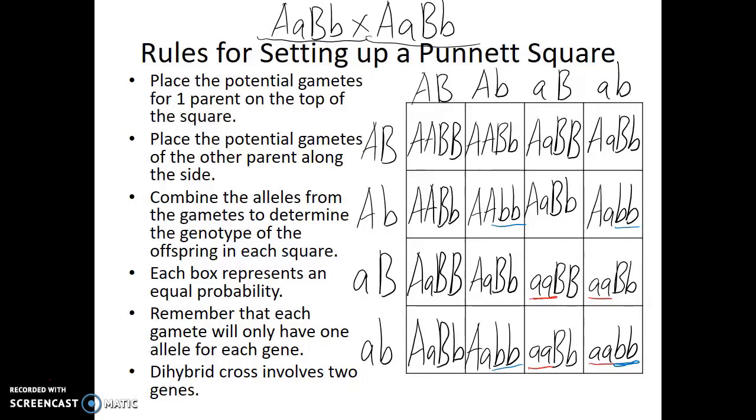There's an equal probability of falling into any one of these sixteen boxes on the chart. But we see nine out of those sixteen boxes would result in an offspring who's dominant for both traits. Three out of the sixteen boxes would result in an offspring dominant for the first trait but recessive for the second. Three out of sixteen would be recessive for the first trait but dominant for the second. And only one out of sixteen would be recessive for both.